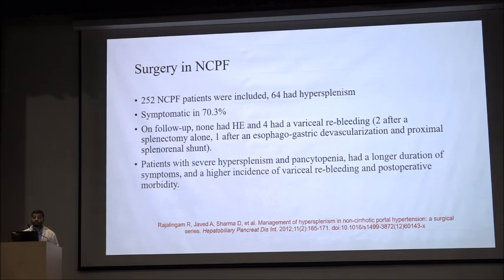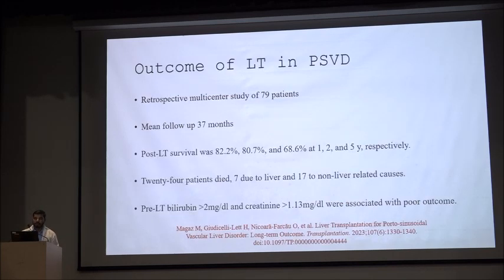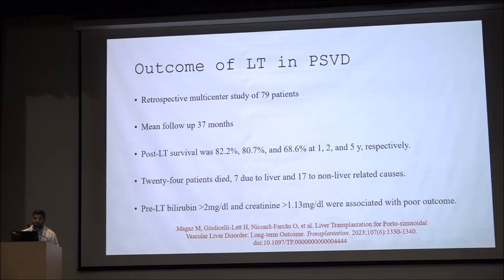Regarding surgery in NCPF, a GV Pun study of 252 NCPF patients — 64 with symptomatic hypersplenism — showed that on follow-up after surgery none had developed hepatic encephalopathy and only 4 had variceal rebleeding. Patients with severe hypersplenism and pancytopenia had longer symptom duration, higher incidence of variceal rebleeding, and post-operative morbidity. For liver transplant outcomes in PSVD, a multi-centre study by Dr. Garcia Pagan of 79 patients with mean follow-up of 37 months showed post-LT survival of 82%, 80%, and 68% at 1, 2, and 5 years respectively. Pre-LT bilirubin above 2 and creatinine above 1.13 were associated with poor outcomes.